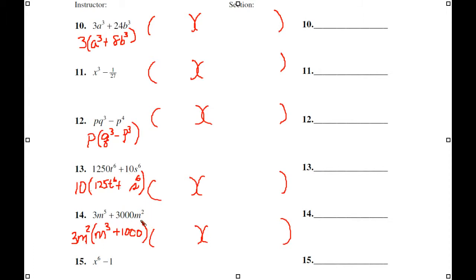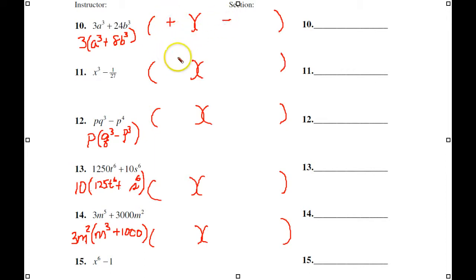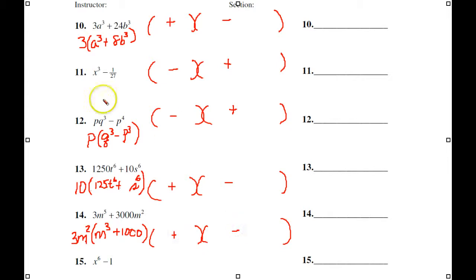Some of the next few take a little modification. For number 10, we have to factor out a 3; for the next, nothing out of there; here we factor out a P; here we factor out a 10; and here we factor out 3M squared. That gives us the factored expressions. Let's do the signs: plus, minus, minus, minus, plus, minus, plus, plus, plus, plus, plus, minus. Don't forget we need the 3M squared here, the 3M squared here, the 10 here, and the 3M squared there.